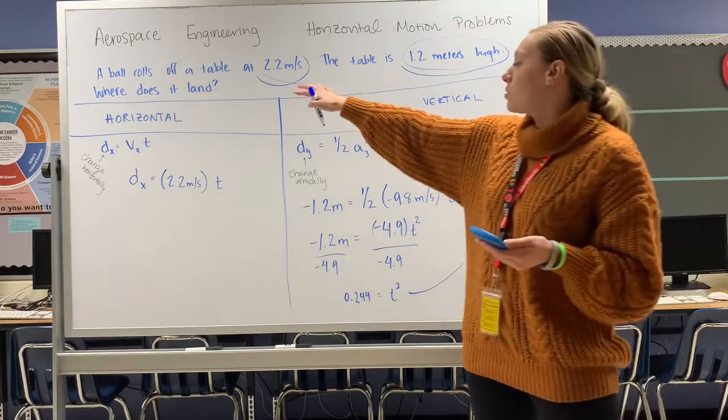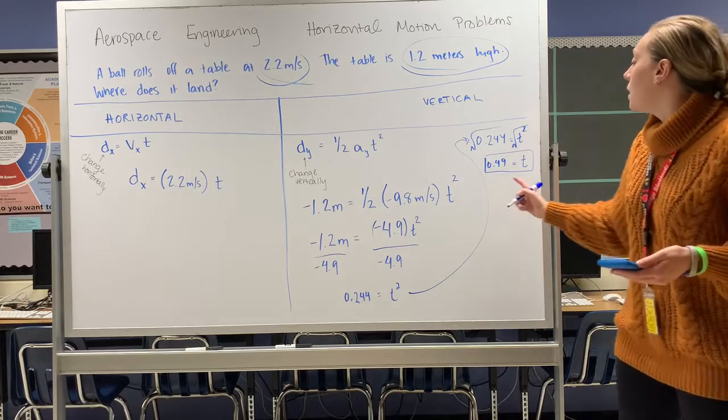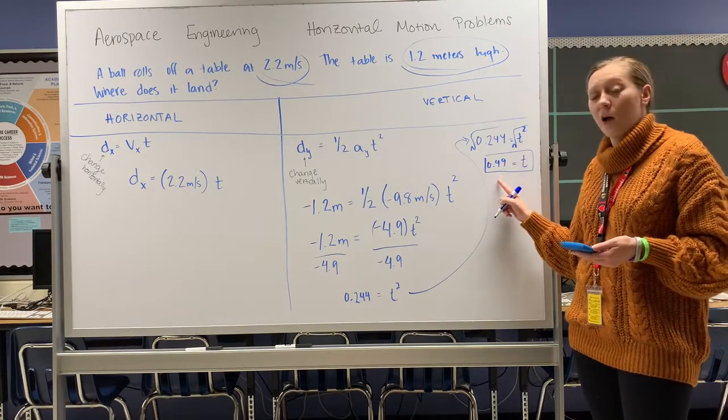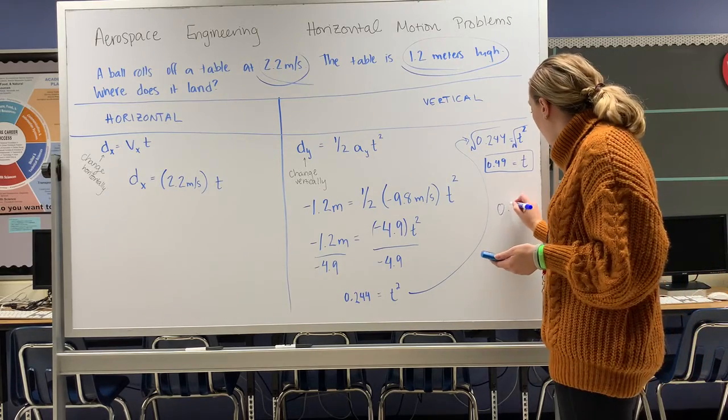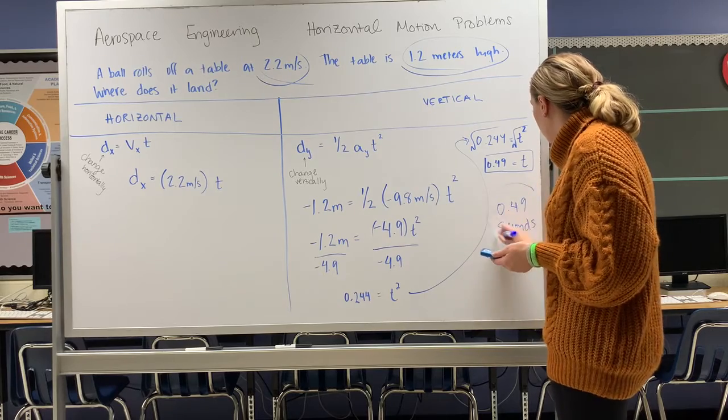That tells me that if a ball rolls off the table at 2.2 meters per second and the table is 1.2 meters high, it will hit the ground in less than a second. It's actually going to hit the ground in about half a second, 0.49 seconds.